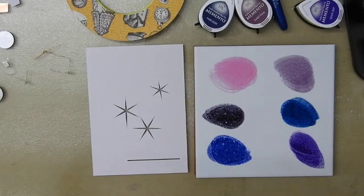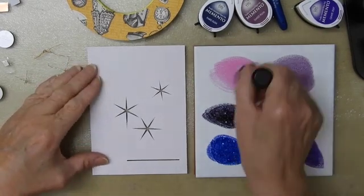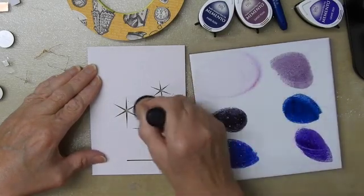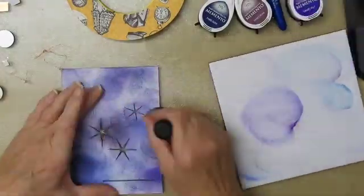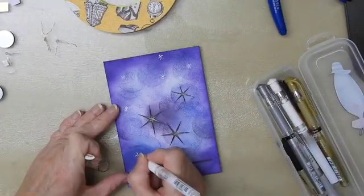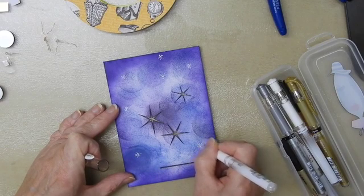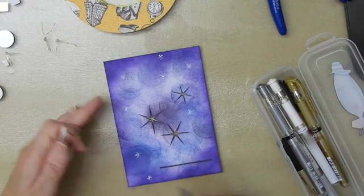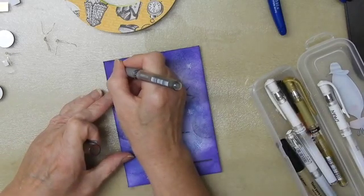I'm going to start this card off by doing a little coloring on my front panel. I've already got some glycerin on my blending tool. This is white and I'm going to go in with some silver stars too.